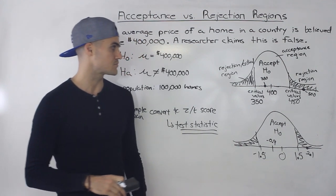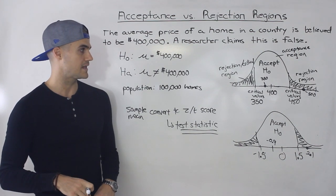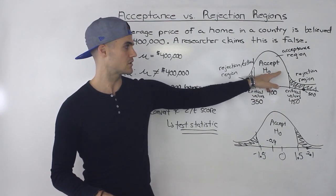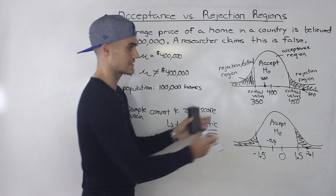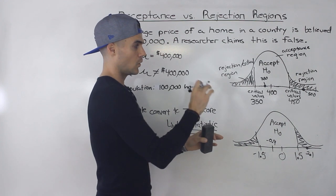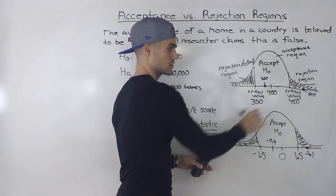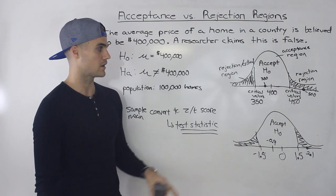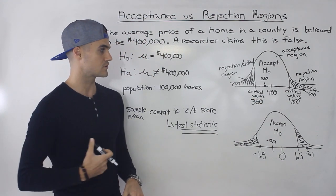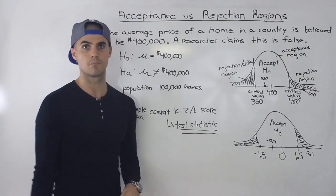No matter what kind of hypothesis testing we do, the intuition from this video stays the same: you'll have critical values, an acceptance region where we don't reject the null, and a rejection region where we do reject the null. In the next couple of videos, I want to go over certain factors that affect the size of the acceptance or rejection region — as the acceptance region gets larger, the rejection region gets smaller, and vice versa. One factor I mentioned is sample size, but we'll discuss more as well.